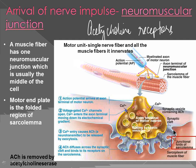This is the sarcolemma and the sarcoplasm of the muscle fiber; the axon is here and between them is the synaptic cleft. Pre-synaptic is the axon terminal because it is before the synapse. The motor end plate and muscle are after the synapse — that's why it's called post-synaptic.